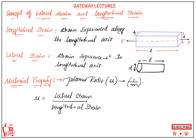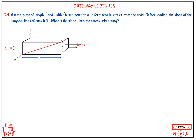Mu is defined as lateral strain upon longitudinal strain. If longitudinal strain is tensile in nature it is taken as positive, and since the lateral strain will be compressive, it will be negative. For the circular rod with force F along length L: longitudinal strain is delta L by L (positive, tensile), and lateral strain is minus delta D by D. This is the definition of Poisson's ratio.